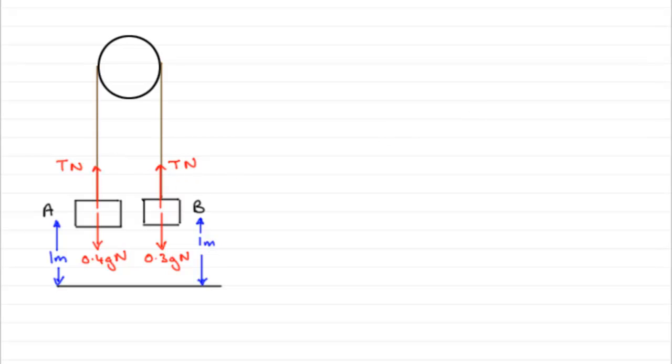We've also got to put in the accelerations. We're done with the forces now acting on each particle. We need to put the accelerations on. Now, for particle A, it's accelerating downwards. We'll just put a double arrow there. It's accelerating downwards because we've got more weight acting downwards on this side. We'll call it A, A metres per second per second.